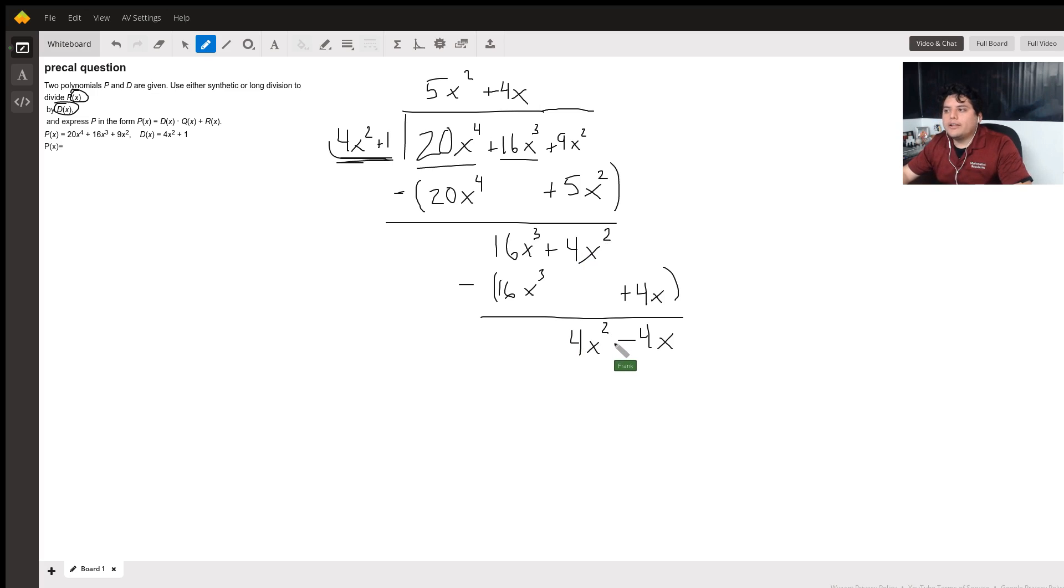Now, let's think about it one last time. What number do you multiply 4x squared with in order to get 4x squared? That's just one, right? So now 1 times 4x squared is going to be 4x squared. And then 1 times 1 is going to be 1.